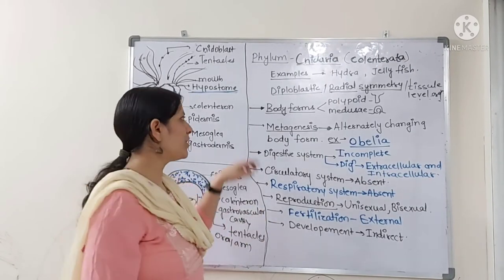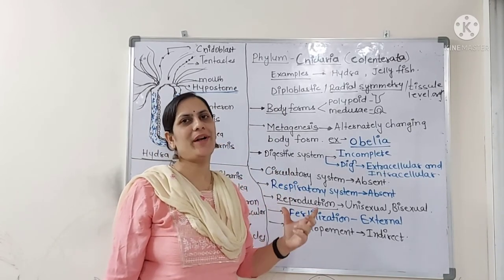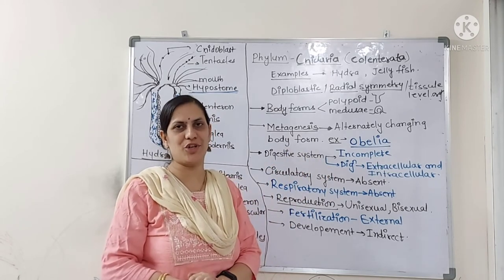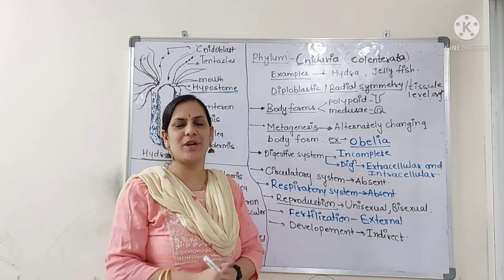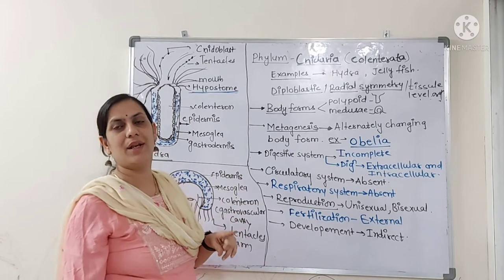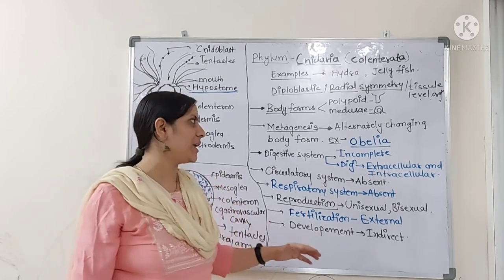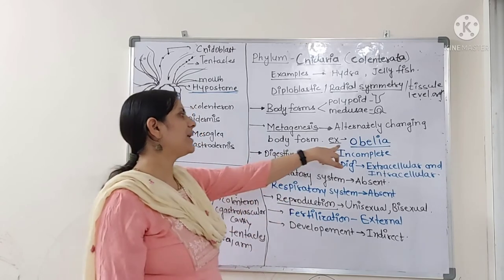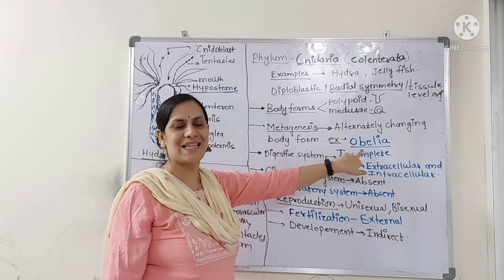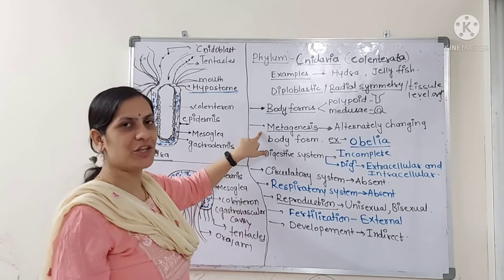Sea anemone is polypoid in shape, and medusoid jellyfish is umbrella-shaped. They never change their body forms in their life. But there is one cnidarian that changes its body form alternately throughout its life — that example is Obelia. Please remember Obelia because it shows a special feature known as metagenesis.